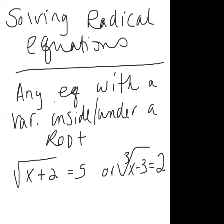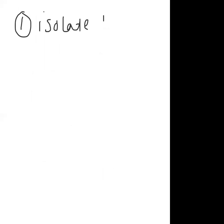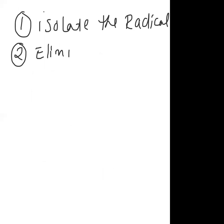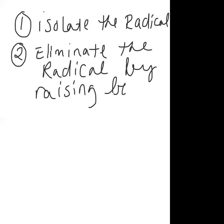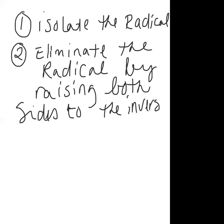To solve a radical equation, step one is to isolate the radical — get the radical by itself on one side of the equation. Step two is to eliminate the radical by raising both sides to the inverse of the root.